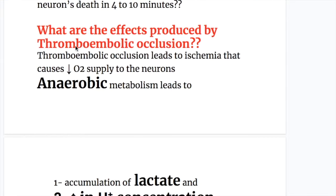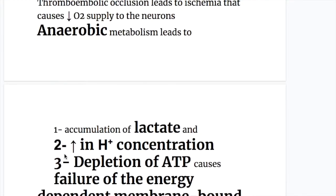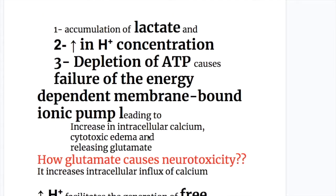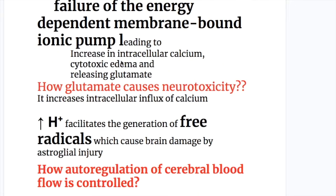What are the effects produced by thromboembolic occlusion? Thromboembolic occlusion leads to ischemia that causes decreased oxygen supply to the neurons. Anaerobic metabolism leads to accumulation of lactate, increase in hydrogen ion concentration, and depletion of ATP causing failure of energy-dependent membrane-bound ionic pumps, leading to increase in intracellular calcium, cytotoxic edema, and releasing glutamate.